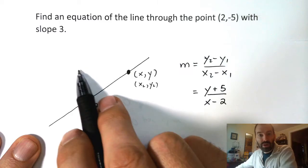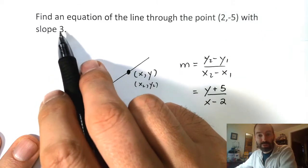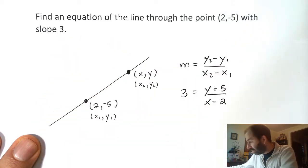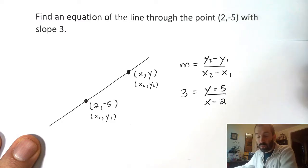Let's see what we get. Well, y2 is what we're calling y. y1 is negative 5. So y minus negative 5 — that's the same thing as y plus 5. x2 is what I'm calling x, and x1 is what we labeled 2. And so we know the slope has to be this. We also know that the slope is 3, so that must be equal to 3.